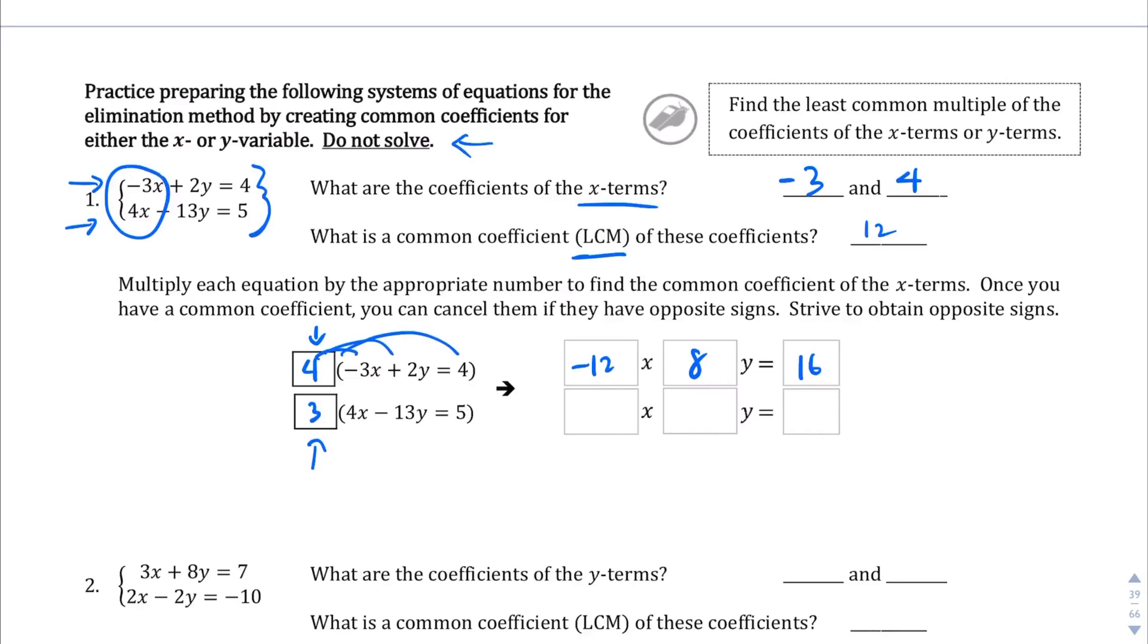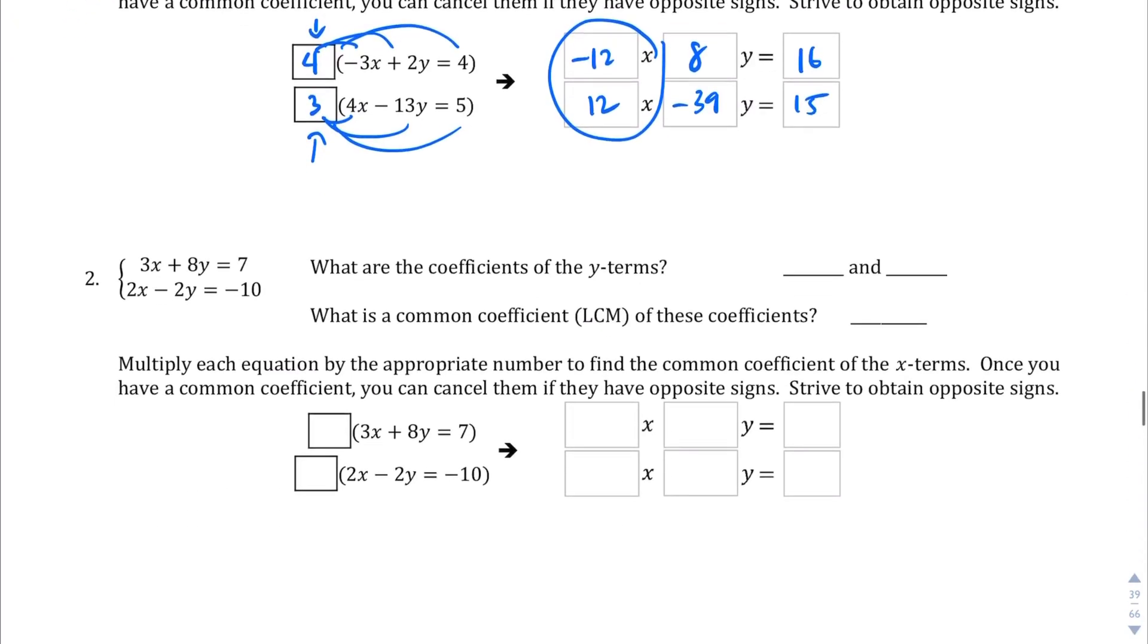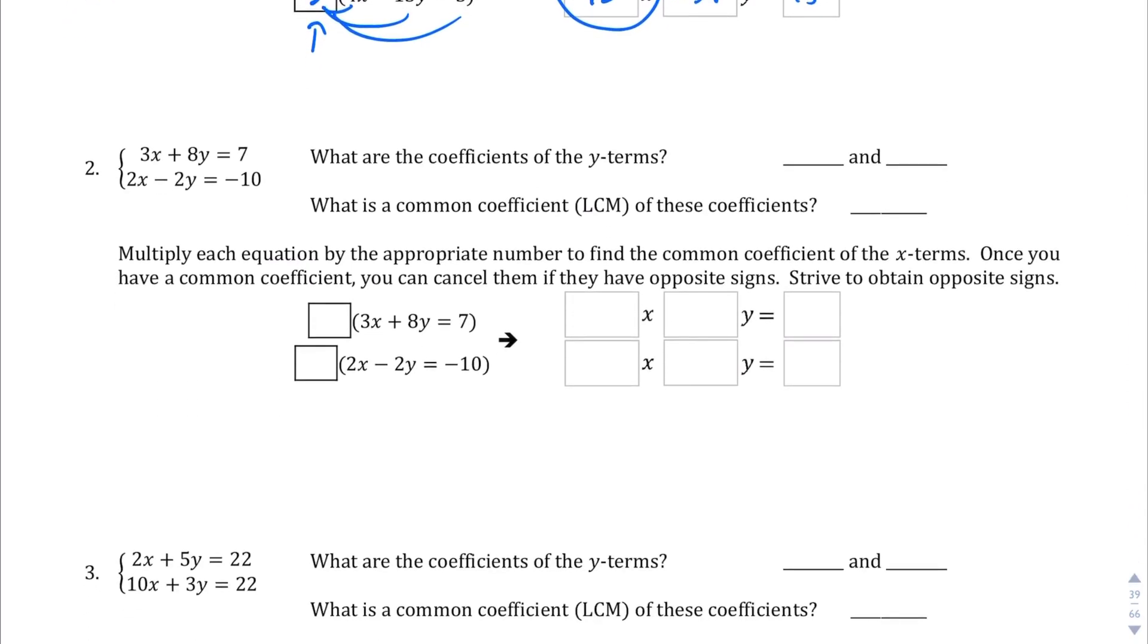And then also, for this equation in the bottom here, 3 times 4x is 12x. 3 times 13, and it's negative 13 by the way, so it's negative 39y. And then 3 times 5 is 15. And we are not solving it, so we're going to stop there. As you can see, now it's nicely set up where if we were to add this, this would eliminate the x's, since negative 12x and positive 12x become 0. So on the next page we'll solve these, but for now we're just getting used to what it means to set these up.